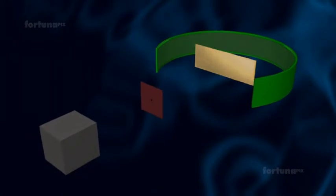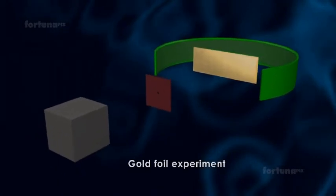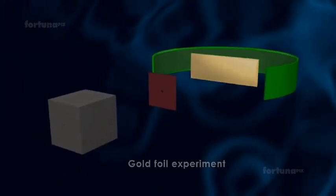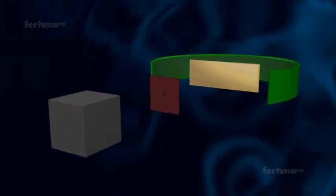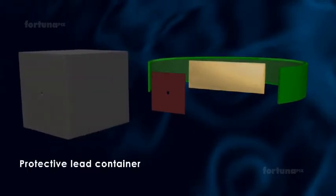This atomic model was an outcome of the famous Gold Foil Experiment. In this experiment, a radioactive source emitting alpha particles, which are positively charged particles, is enclosed in a protective lead container.